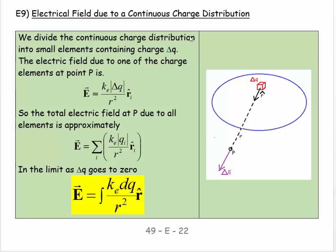So we divide the continuous charge distribution into small elements containing a little bit of charge delta q. The electric field due to one of the charge elements is given by Ke delta q over r squared. That's the magnitude multiplied by the unit vector in the right direction. The total electric field is the sum of all these little bits. In the limit that delta q goes to dq, we have E is equal to the integral of Ke dq over r squared times the unit vector r hat.